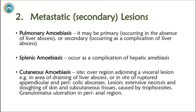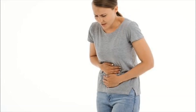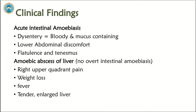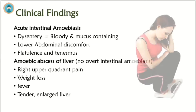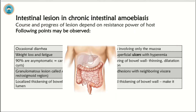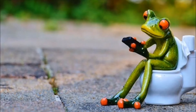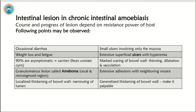Clinical findings — in acute intestinal amoebiasis: dysentery that may be bloody or mucus-containing, lower abdominal discomfort, flatulence, and tenesmus. Amoebic abscess of the liver — when intestinal amoebiasis is not overt: right upper quadrant pain, weight loss, fever, and tender enlarged liver. Intestinal lesions in chronic intestinal amoebiasis: the course and progress of lesions depends on the resistance power of the host. Observations may include occasional diarrhea, weight loss, and fatigue.